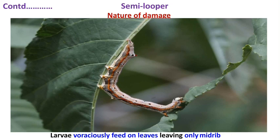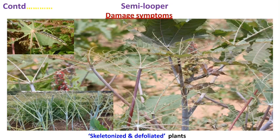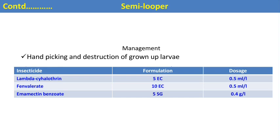In this picture you can see the castor semilooper, named so because they form a half loop during walking. The larva voraciously feeds on leaves from margin up to the mid-rib, with only the mid-rib remaining on the infested plant. In case of severe infestation, complete defoliation occurs and skeletonization of the plant is seen. For management, recommended insecticides against the semilooper are lambda-cyhalothrin, fenvalerate, and emamectin benzoate.